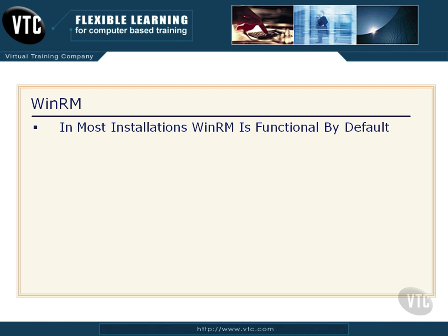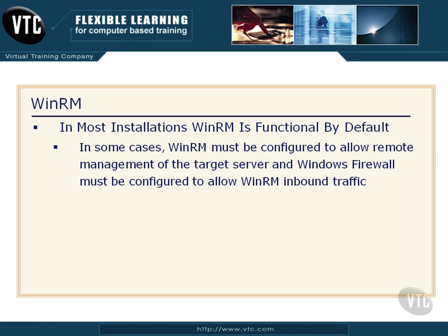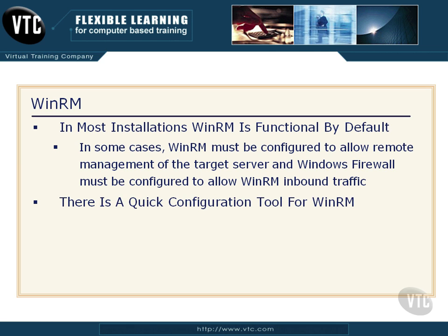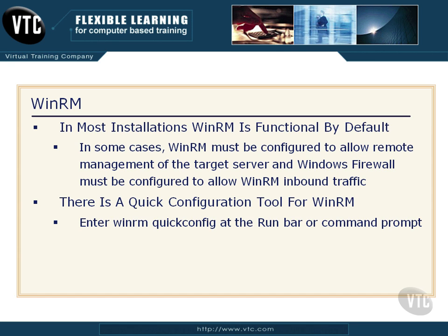In most installations of Windows Server 2012, WinRM is functional by default. However, you're going to run across times where WinRM has to be configured to allow remote management of the target server, and you've got other things to consider like Windows Firewall settings, allowing WinRM to pass inbound traffic. Every time I've tried to use this, I have to run the quick configuration tool on the machine to actually get it to work.